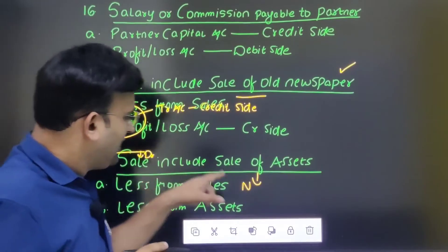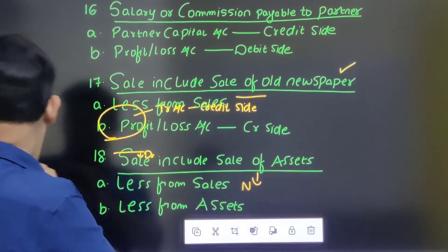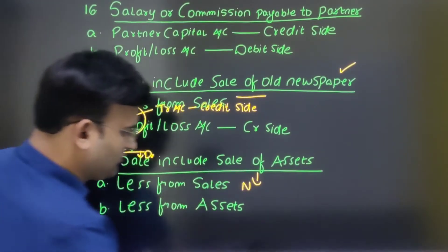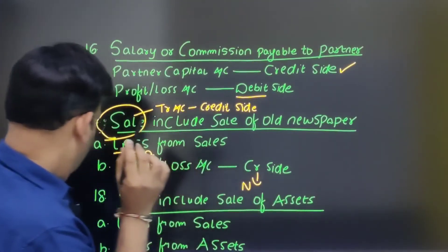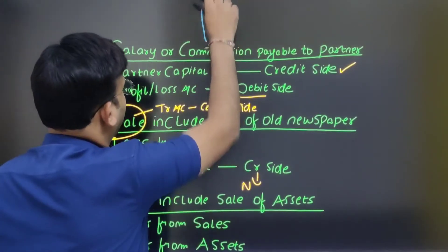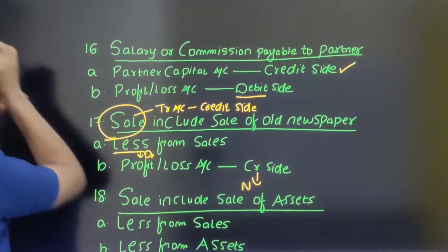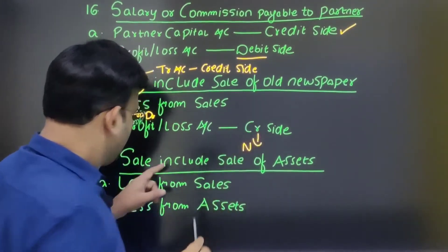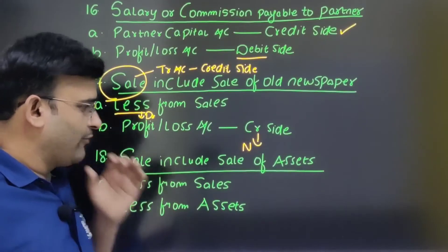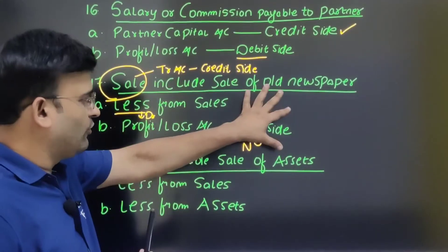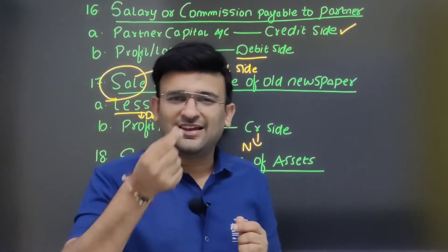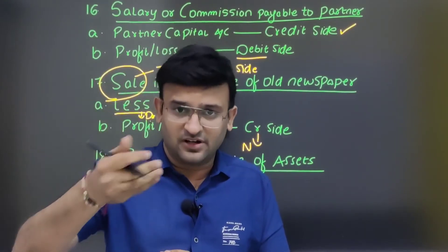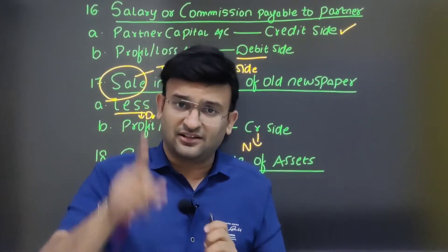Next adjustment: sale includes sale of assets. When the accountant has included the sale of an asset inside sales, that is incorrect. We need to correct this by making the necessary adjustments.